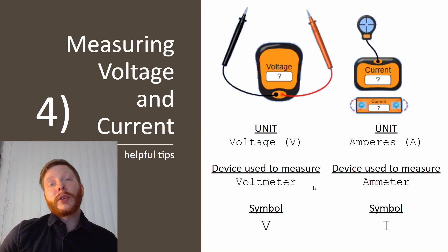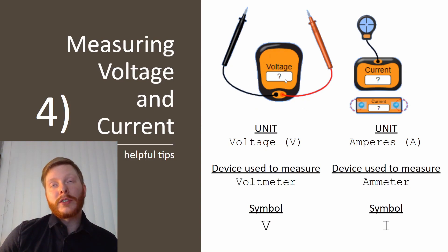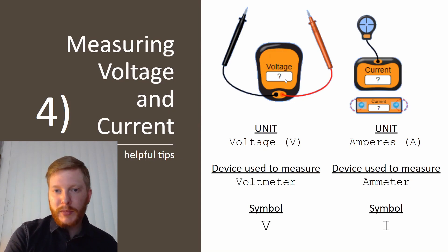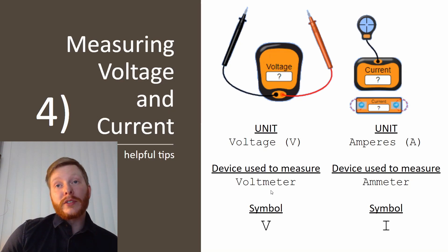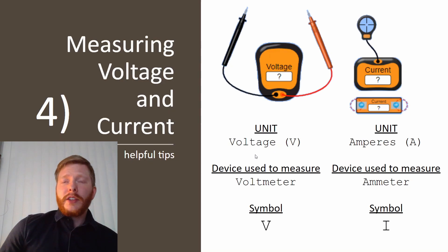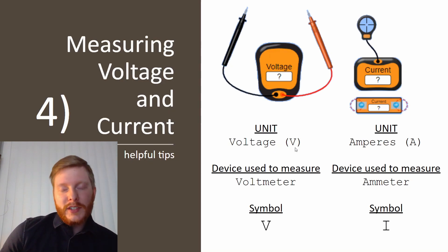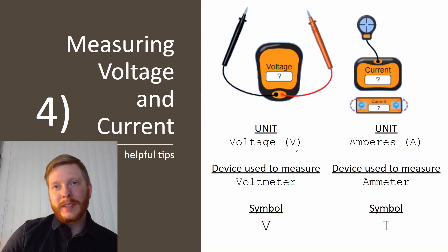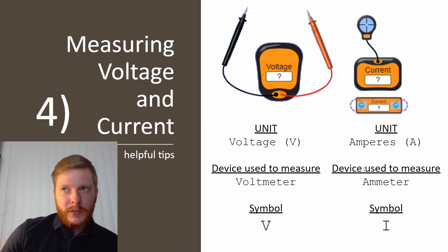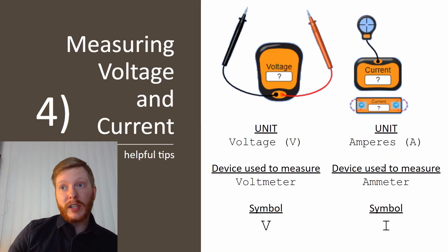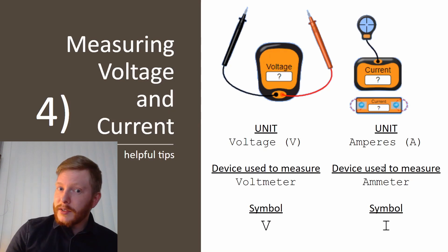For three light bulbs in parallel, you see one path, a second path, and a third path — this will make more sense once we start the activity online. The fourth thing we're going to look at is measuring voltage. We're going to use a voltmeter to measure the voltage coming out of the battery and the voltage across the light bulbs. Voltage is very straightforward — the unit for voltage is volts.